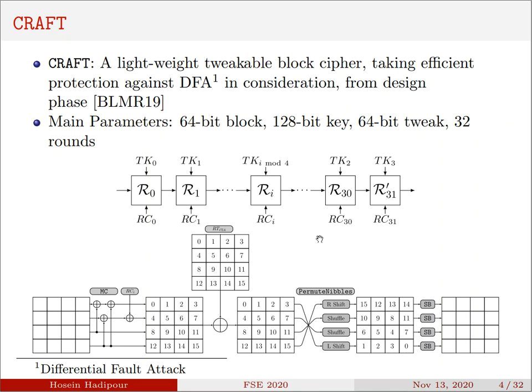It receives a 64-bit plaintext with 128-bit key plus a 64-bit tweak, and then iterates 31 same rounds plus one linear round to produce a 64-bit ciphertext. Each round of CRAFT, excluding the last one, performs five basic operations on the internal state. The internal state can be viewed as a 4 by 4 array of nibbles.